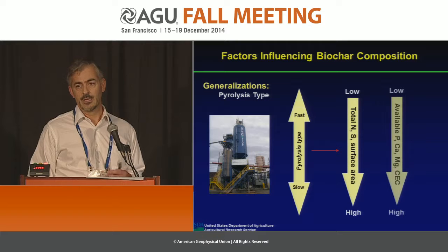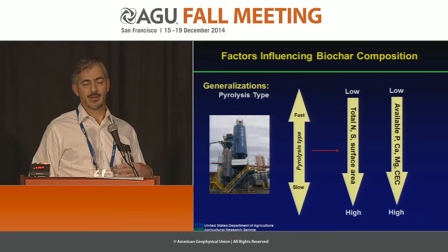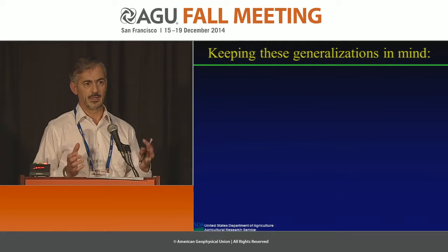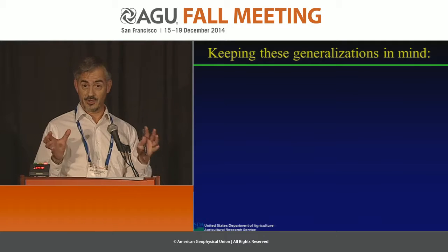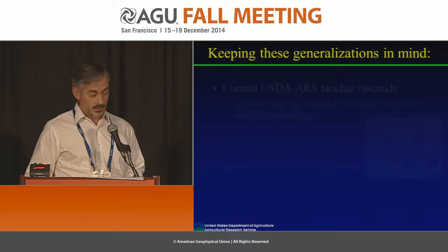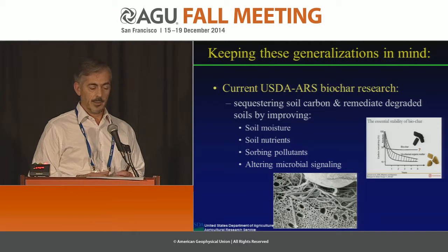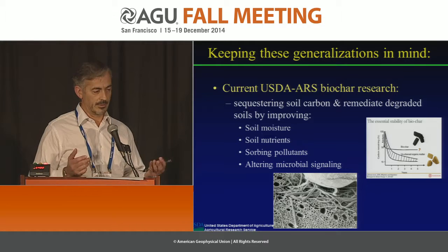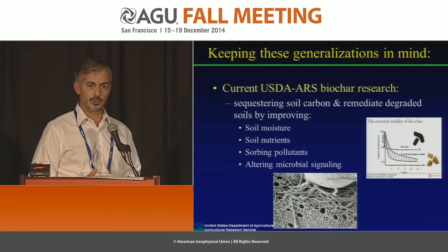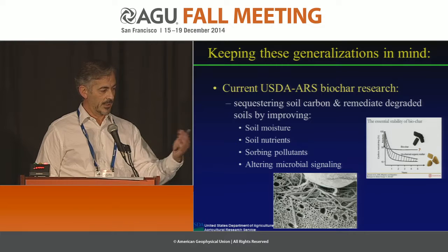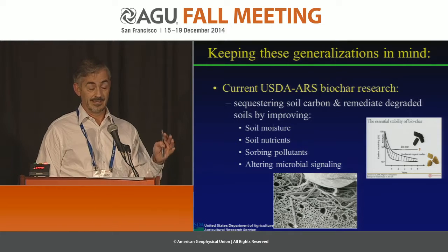We can also make some generalizations about pyrolysis type. Comparing fast versus slow pyrolysis, one could argue that slow pyrolysis favors a lot of the constituents in the final product that a researcher or land applicator would want. For example, available nutrient content is greater under slow pyrolysis versus fast pyrolysis. The concept within the Agricultural Research Service is to take all these specifics and put them together to not only sequester carbon in the soil, but to improve or remediate degraded soils across the U.S. — by improving soil moisture, nutrients, sorbent pollutants, as well as altering microbial signaling.